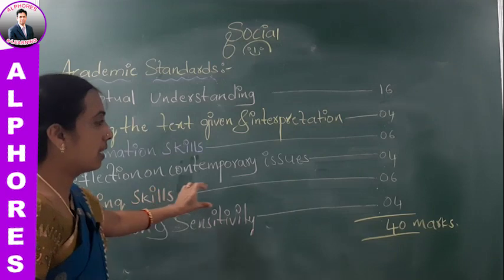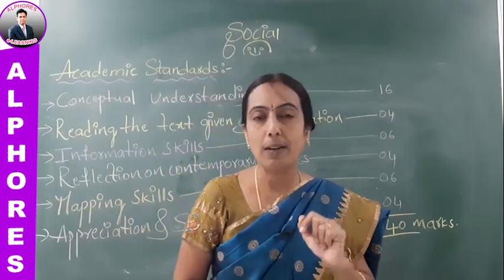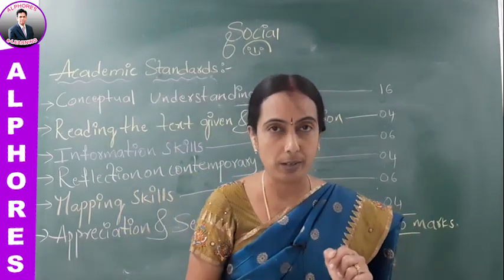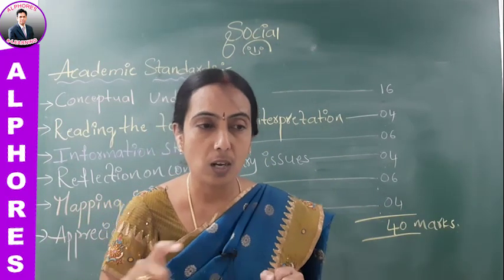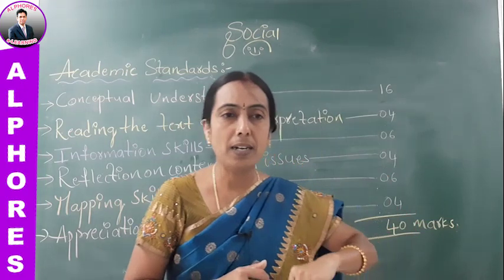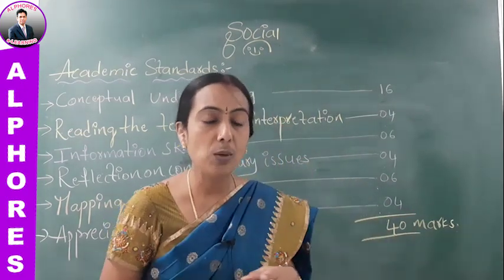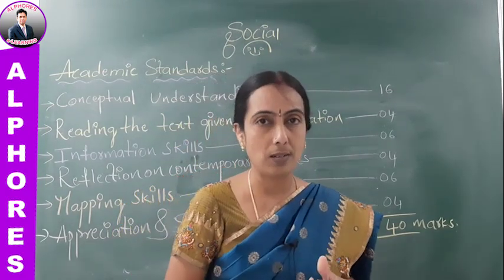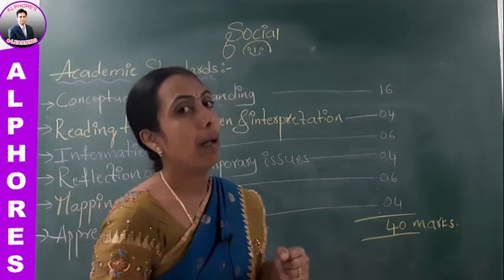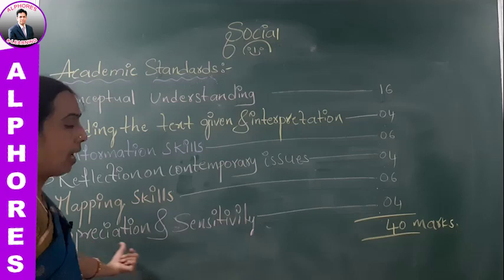AS5 is mapping skills, awarded with six marks. Two questions will be asked — one question in two marks, such as draw the outline map of India or Telangana. It is not mandatory that only map drawing will be asked; a map may be given and map reading questions will be asked for two marks. The remaining four marks account for map pointing. Total mapping skill accounts for six marks.